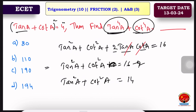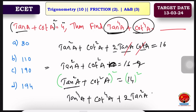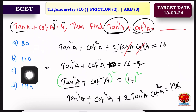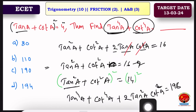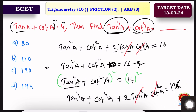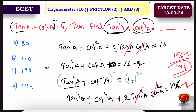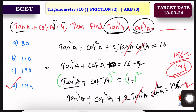Now find tan⁴A + cot⁴A. Square both sides again: (tan²A + cot²A)² = tan⁴A + cot⁴A + 2·tan²A·cot²A = 196. So tan⁴A + cot⁴A = 196 − 2 = 194. The answer is 194, which is option D.